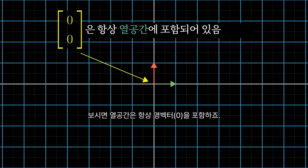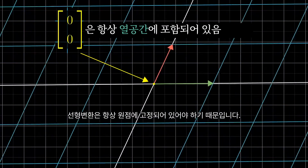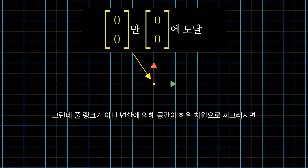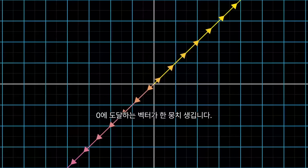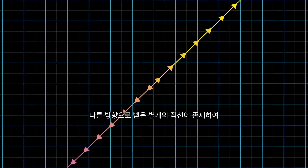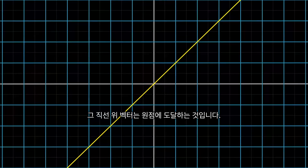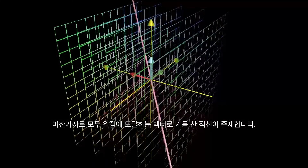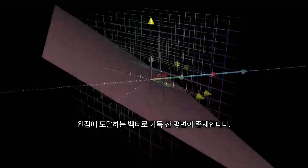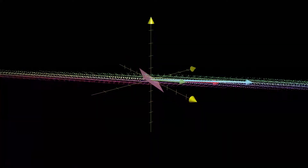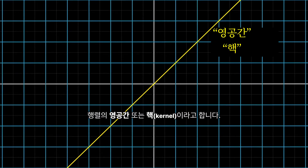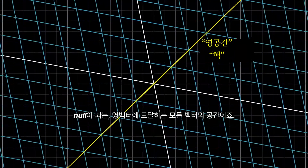Notice, the zero vector will always be included in the column space, since linear transformations must keep the origin fixed in place. For a full rank transformation, the only vector that lands at the origin is the zero vector itself. But for matrices that aren't full rank, which squish to a smaller dimension, you can have a whole bunch of vectors land on zero. If a 2D transformation squishes space onto a line, for example, there is a separate line in a different direction full of vectors that get squished onto the origin. If a 3D transformation squishes space onto a plane, there's also a full line of vectors that land on the origin. If a 3D transformation squishes all of space onto a line, then there's a whole plane full of vectors that land on the origin.